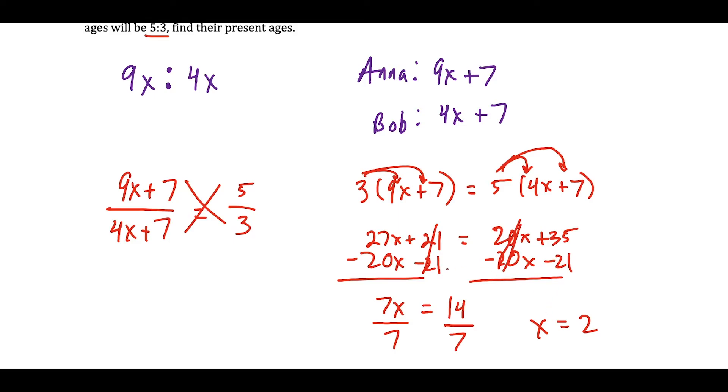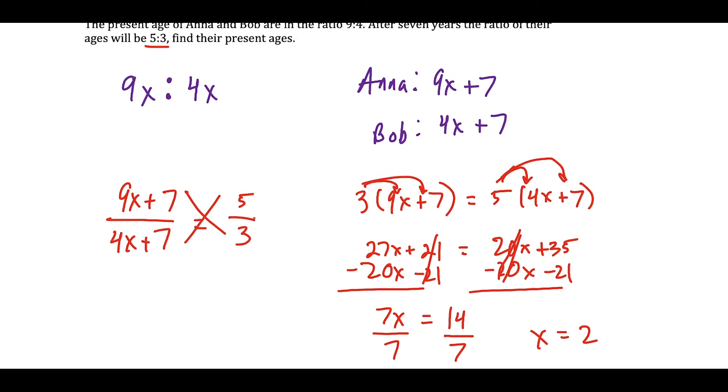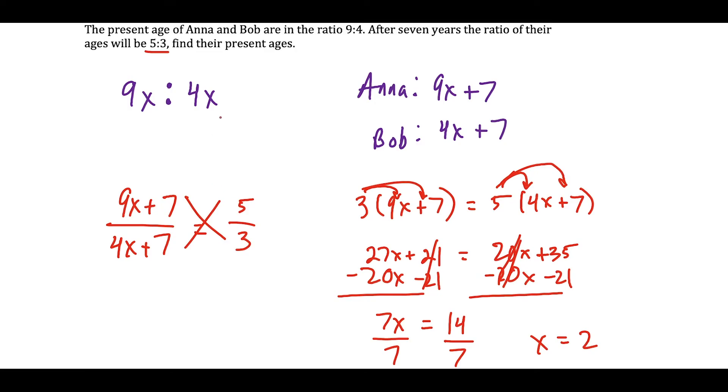Now we just have to think about what does this mean in the context of the question. x is equal to 2, we want to find their present ages. So Anna's present age is 9 times x, and we just found x is equal to 2, so that means Anna is 18 years old. And Bob, if we plug 2 back in, we're going to have 4 times 2. Bob is 8 years old.